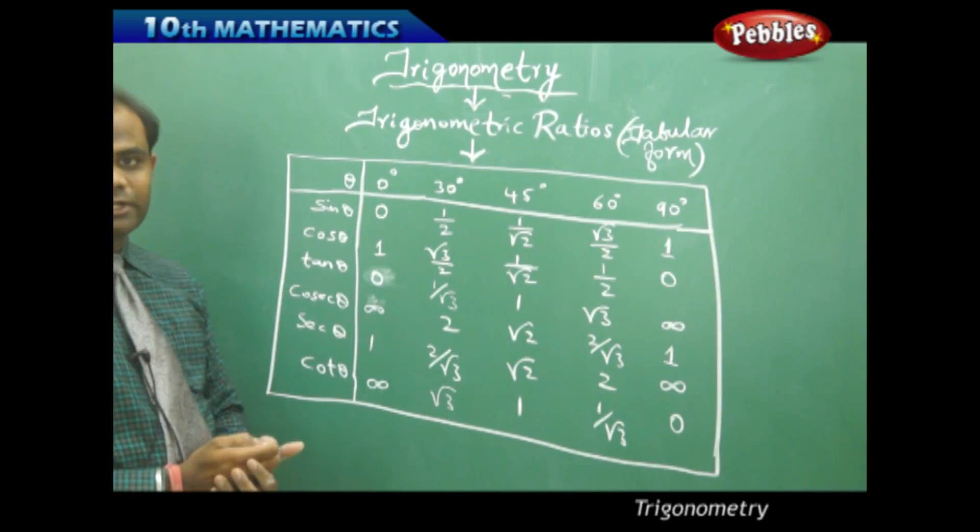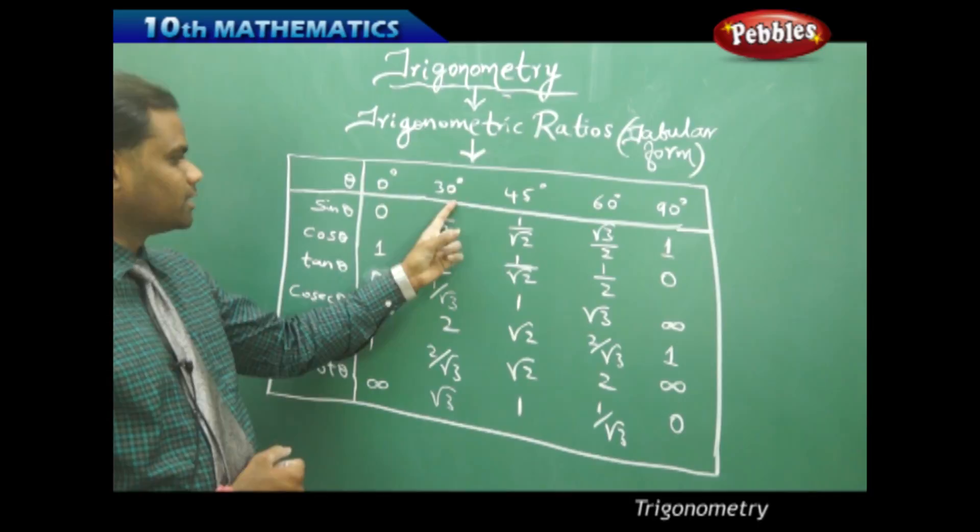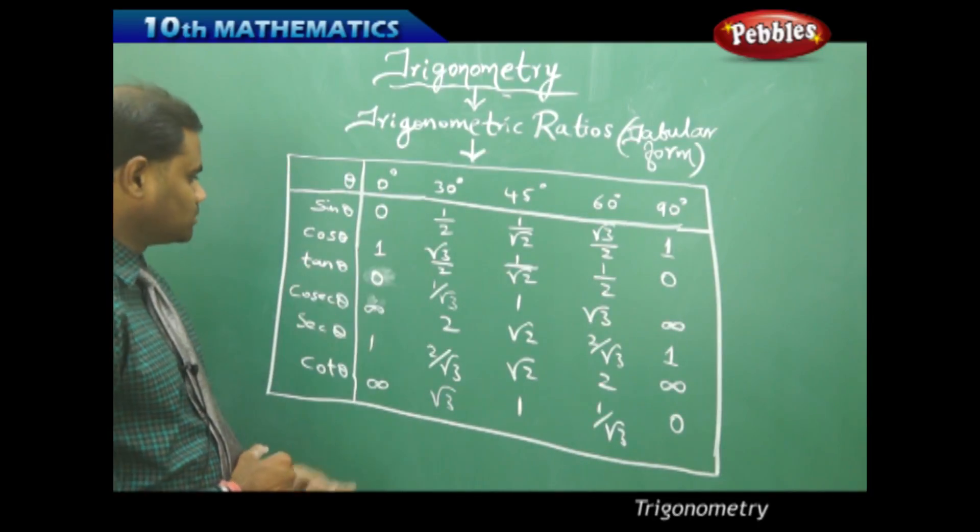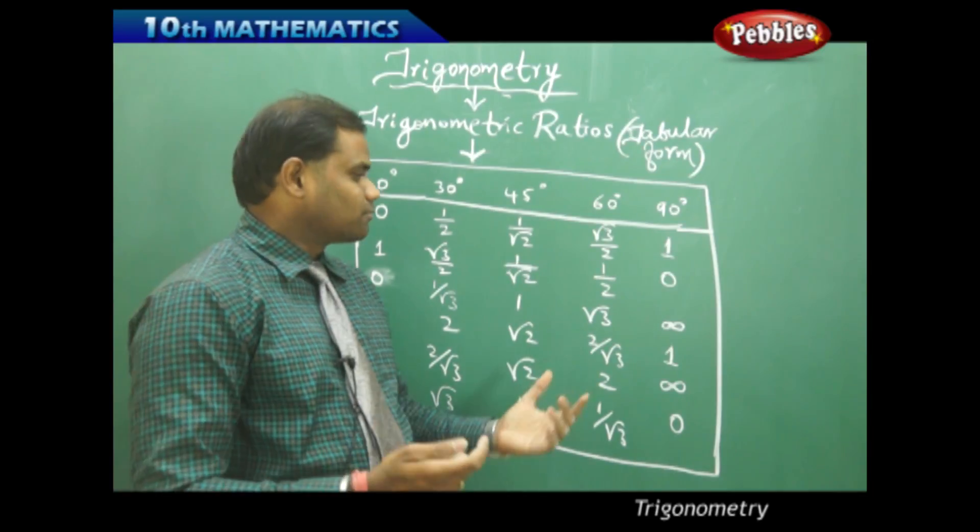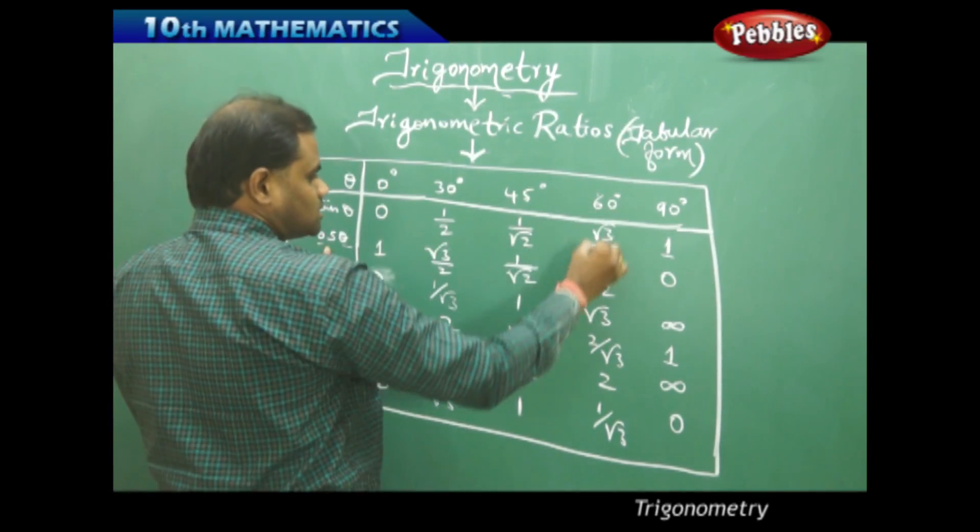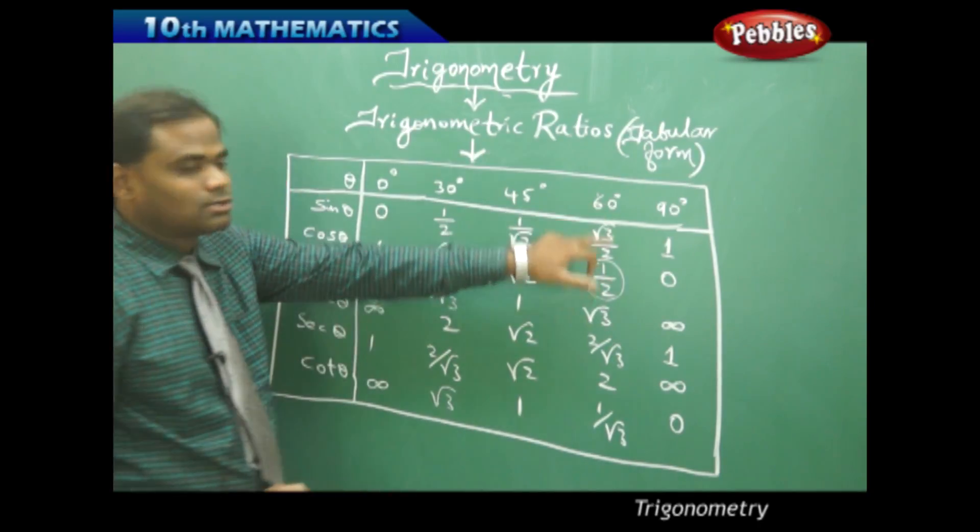So these are the six trigonometric ratios whose special angles 0, 30, 45, 60 and 90 are identified for each of the ratios. Say for example I would like to find cos 60, then I go to the cos column and then to the 60 column - 1 by 2 is cos 60.